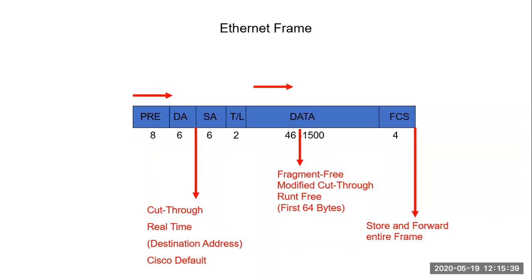A switch can make a forwarding decision based on different elements of the frame. If it looks at the first six bytes of the destination MAC, that's called cut-through or real-time — that is the Cisco default, but the problem is we propagate collisions. We can adjust the switch to look at the first 64 bytes, called modified cut-through or runt-free. Or we could look at the entire frame, called store-and-forward.